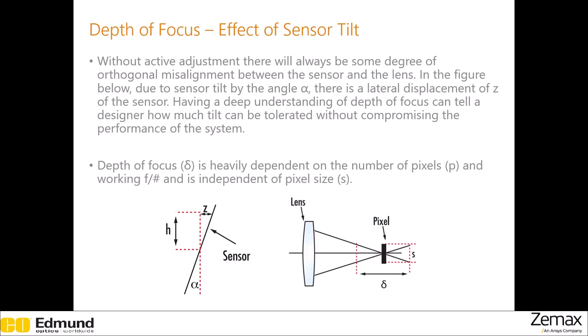This tolerance has a strong dependence on the light gathering capability of the lens — so the F number and the numerical aperture — as well as the sensor size and the number of active pixels on the sensor.